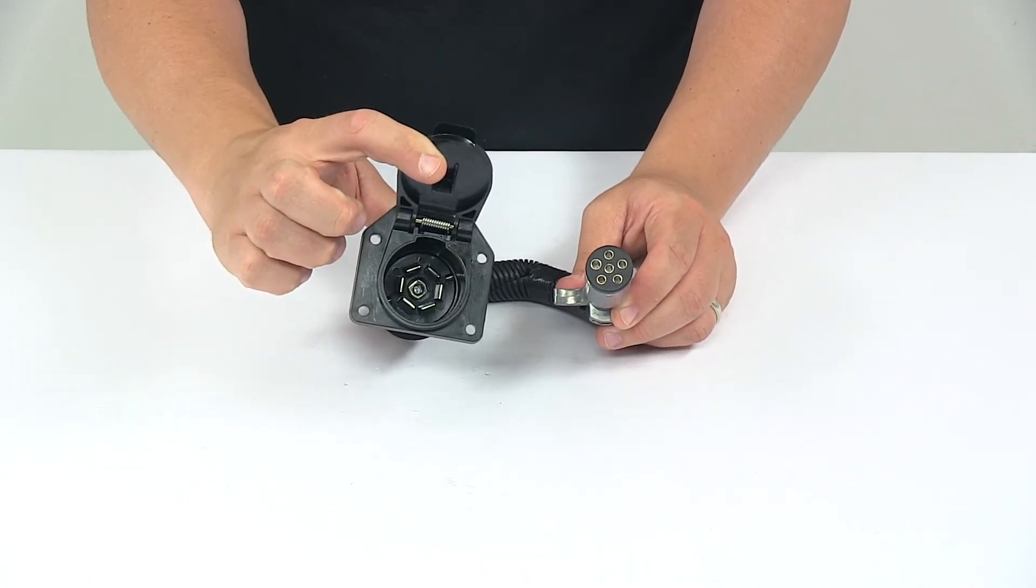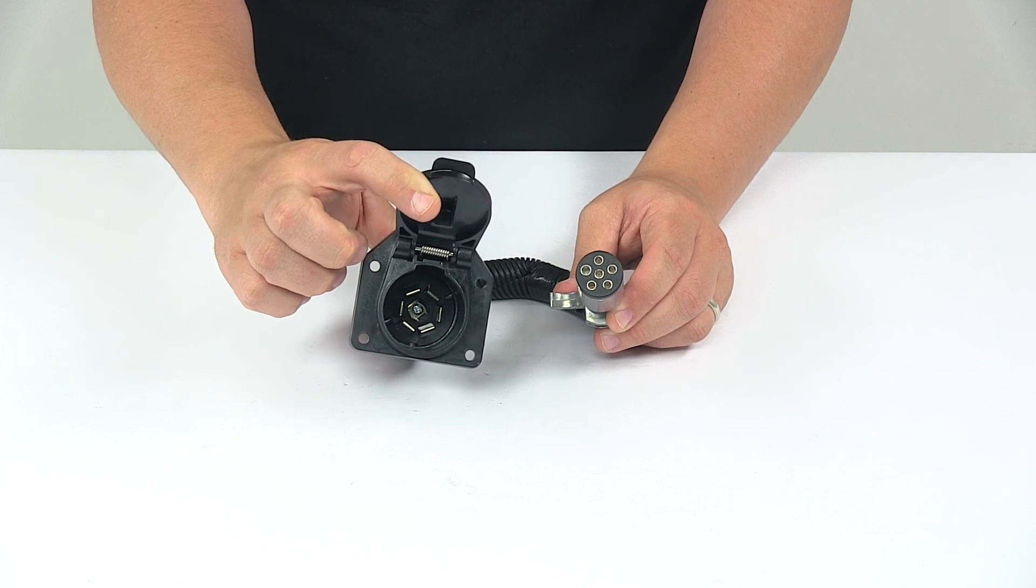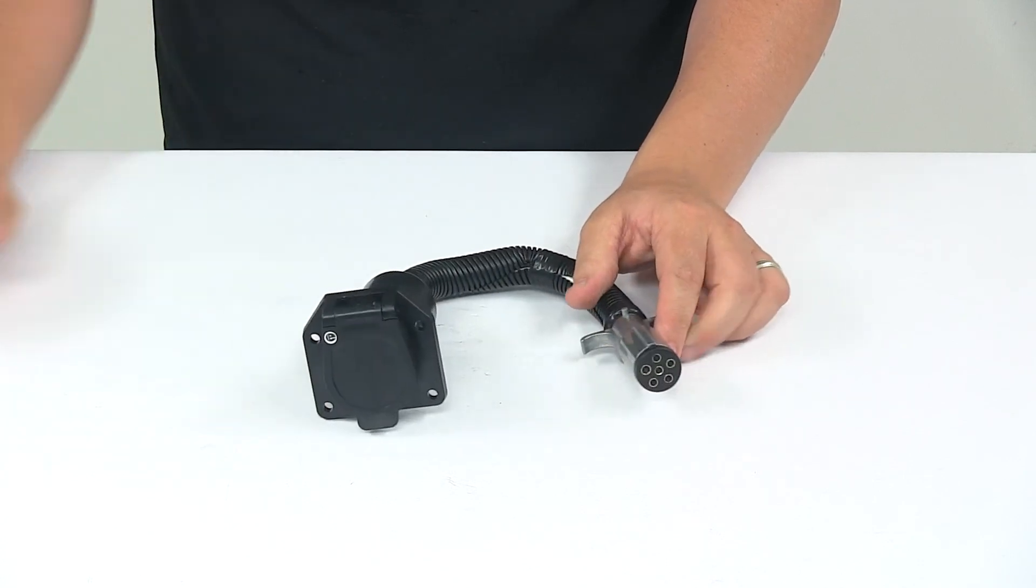That's going to do it for today's look at the six-way round to seven-way RV adapter with an eight-inch pre-wired cable.